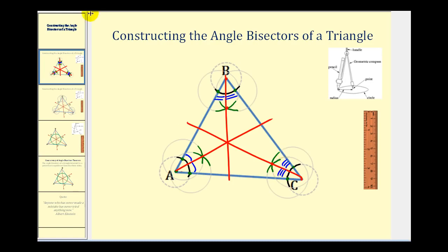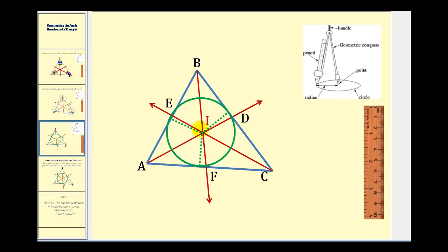Notice that the angle bisectors intersect in one point — this is called the point of concurrency. This point is called the incenter, and the incenter is equidistant from the three sides of the triangle. Remember, the distance is the length of the segment that is perpendicular to the side of the triangle, not the length of the angle bisector.